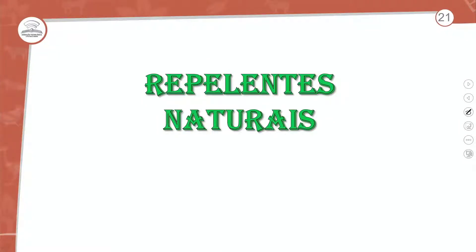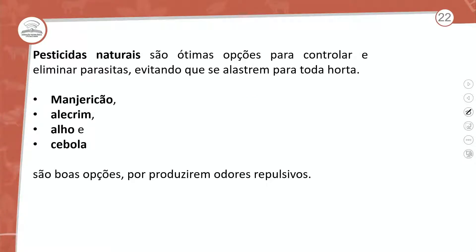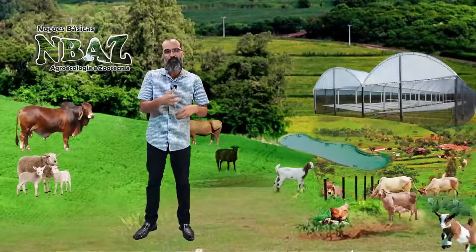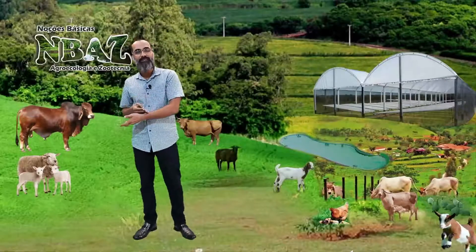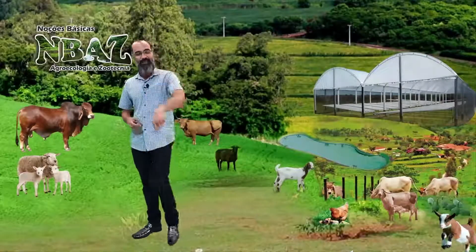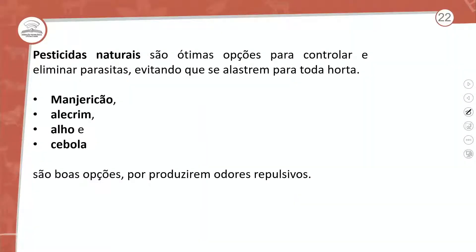Agora vamos falar de repelentes naturais. Pesticidas naturais são ótimas opções para controlar e eliminar parasitas, evitando que se alastrem na horta. Esses repelentes naturais não são produtos químicos, mas sim outros seres vivos vegetativos utilizados em consórcio que afugentam esses agentes. O manjericão, alecrim, alho e cebola são excelentes opções para a produção de odores repulsivos.